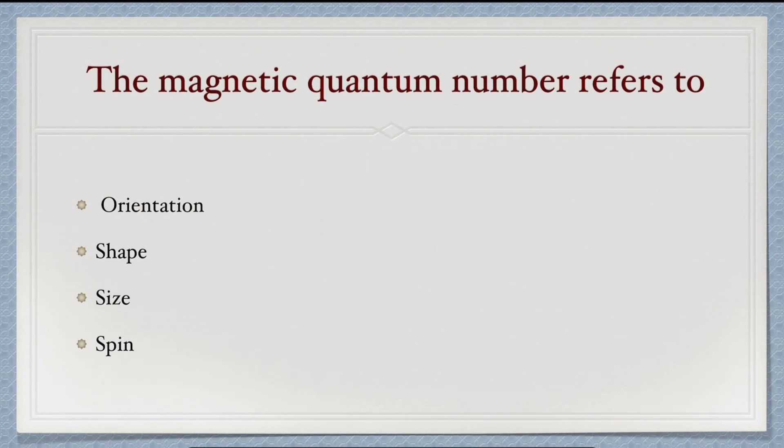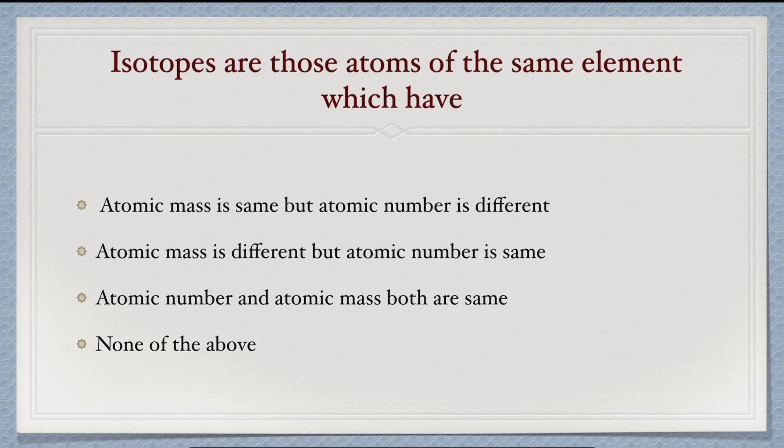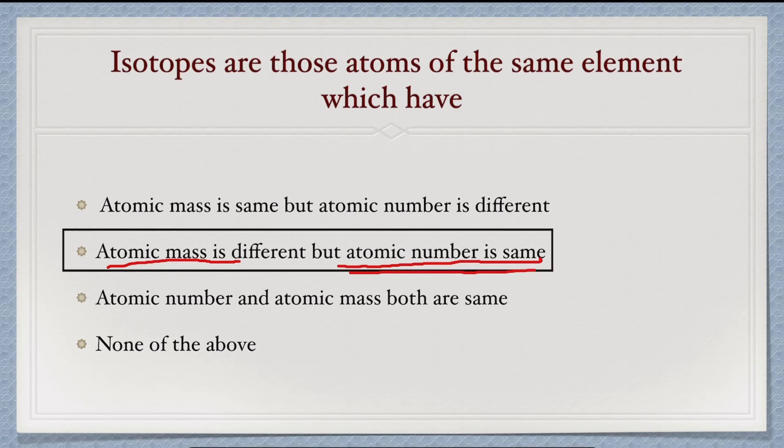Next question: the magnetic quantum number refers to what? Magnetic quantum number refers to orientation. Shape and size are given by azimuthal quantum number, and spin by spin quantum number. Next question: isotopes are atoms of the same element which have what? Isotopes are defined as atoms where the atomic number is the same but atomic mass is different, meaning neutrons will be different. So option second will be correct.